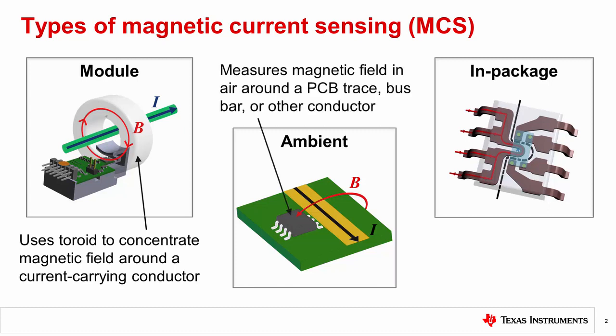Next, ambient magnetic current sensing utilizes the ambient in-air field generated by a PCB trace, bus bar, or other conductor to sense current. This is accomplished using a linear hall or other magnetic sensor at some fixed mechanical distance from the conductor. This type of solution can also utilize a magnetic concentrator or shield to improve signal levels or reduce the impact of stray fields.